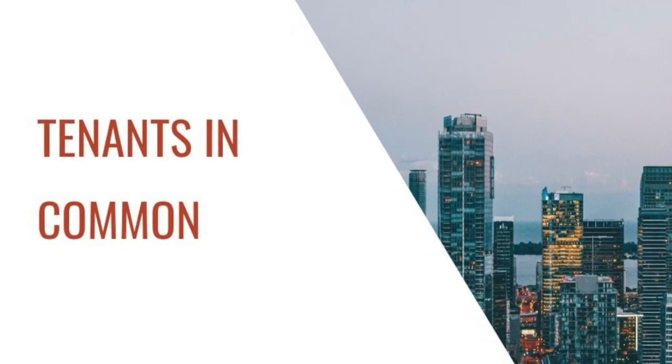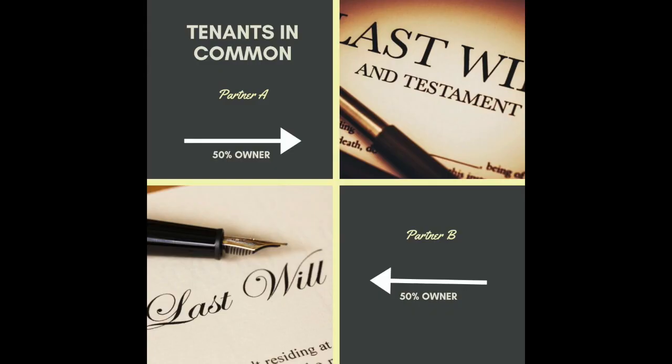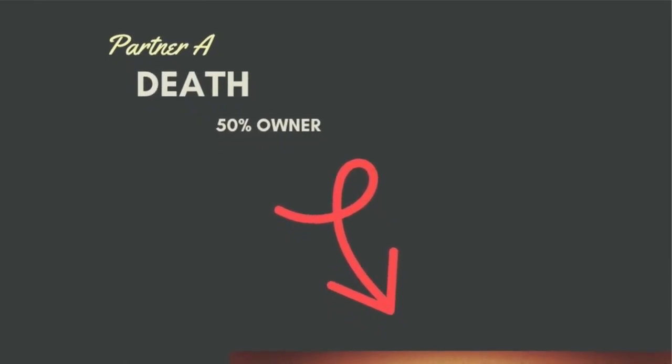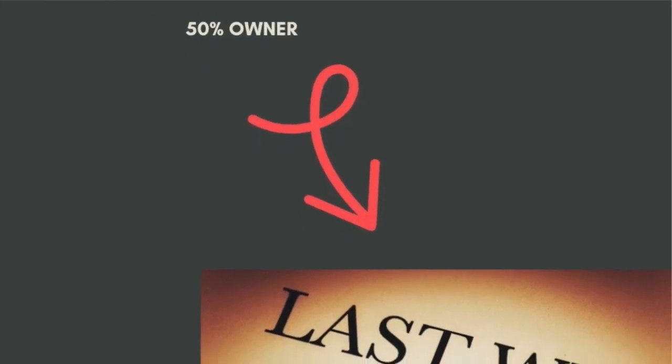What about tenants in common? For example, you and your friend purchase a property for business purposes and are equal partners. You'd be listed as tenants in common — Friend A would have 50% of the property and Friend B would have 50%. The 50% is a hypothetical number; you could have various splits like 90/10%, etc.